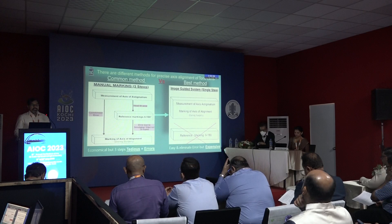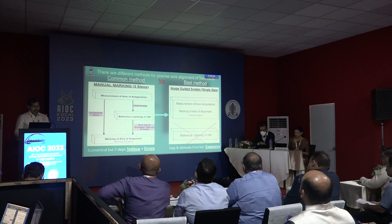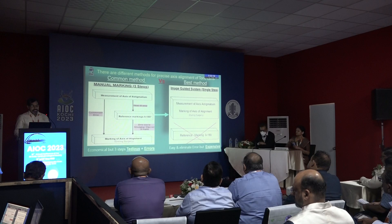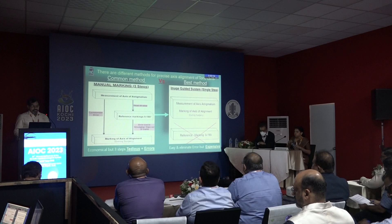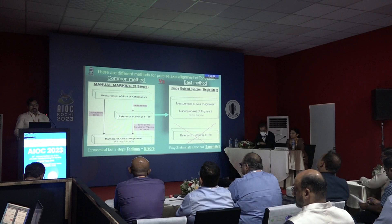There are different methods for precise axis alignment of the toric lens. The common method is manual marking. It is economical but a three-step method, so it is tedious and there are chances of error due to cyclotorsion, head tilt, and sometimes during surgery the preoperative mark smudging or wipe-out of the marks can occur causing error.